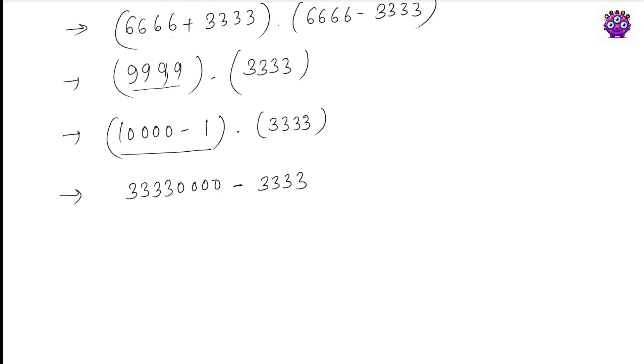Now let's subtract this term. When we subtract, 10 minus 3 gives 7, 9 minus 3 gives 6, 9 minus 3 gives 6, 9 minus 3 gives 6, and we get 33333. So this is the answer for our problem: 33326667.